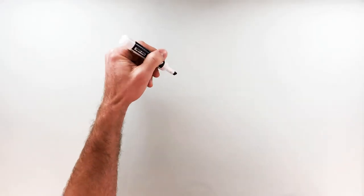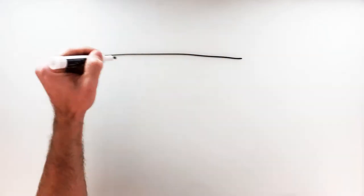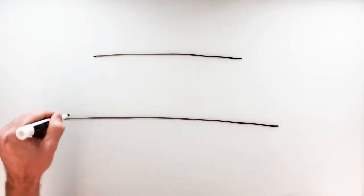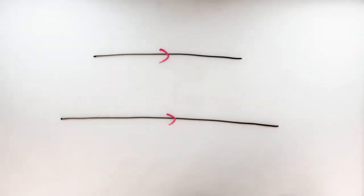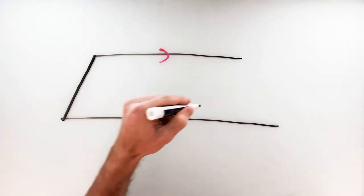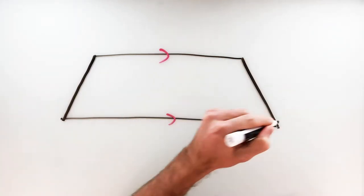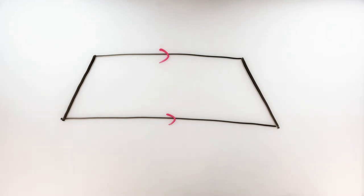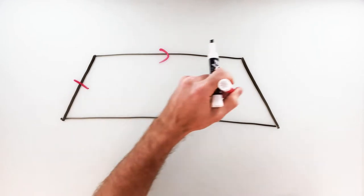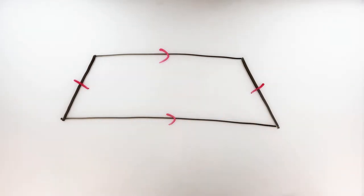Jumping right in, we're going to get a quick reminder of the definition of a trapezoid, which is a quadrilateral with exactly one pair of parallel sides. A special type of trapezoid is what we call the isosceles trapezoid, and the isosceles trapezoid is a trapezoid where the non-parallel sides are congruent. This is the one we're going to dig into today.